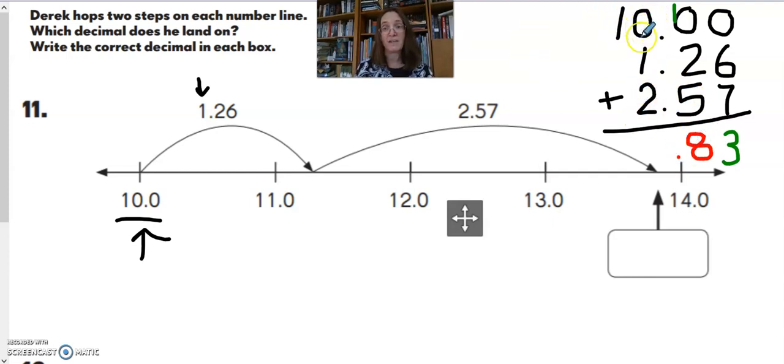Moving to the single ones place, I've got 0 plus 1 plus 2, that's 3. And moving to the tens place, 1 ten plus nothing is 1 ten. So the correct answer on this number line, to find where he landed, he landed at 13 and 83 hundredths on this number line.